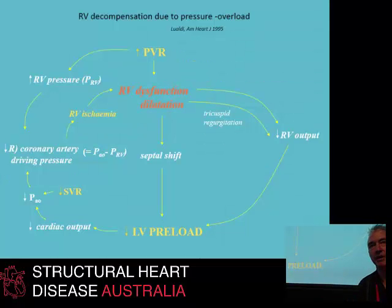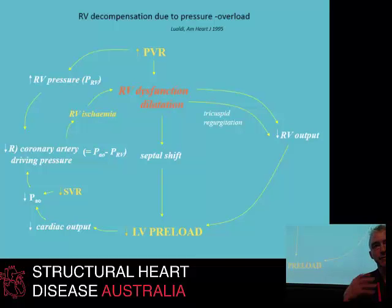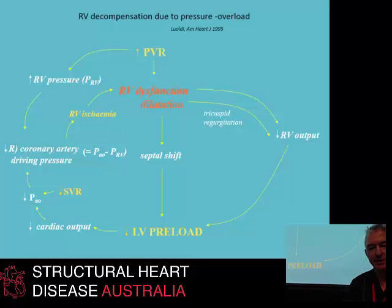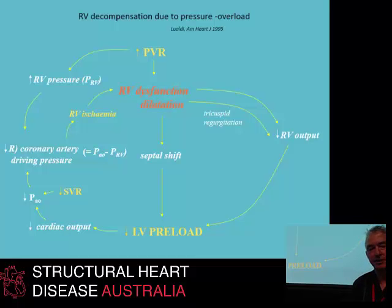If you've ever seen it happen, it happens very quickly. The patient rapidly progresses to a PEA-type arrest with very distended, blue neck veins from venous distension and very high right-sided pressures. It can be very hard to resuscitate patients once they have actually entered the spiral.